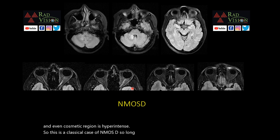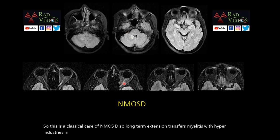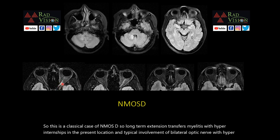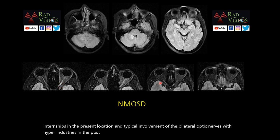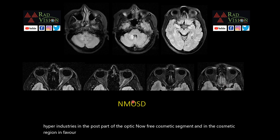Longitudinally extensive transverse myelitis with hyperintensities in the periventricular location and typical involvement of the bilateral optic nerve — with hyperintensities in the posterior part of the optic nerve, pre-chiasmatic segment, and chiasmatic region involvement — favour NMOSD, neuromyelitis optica spectrum disorder.